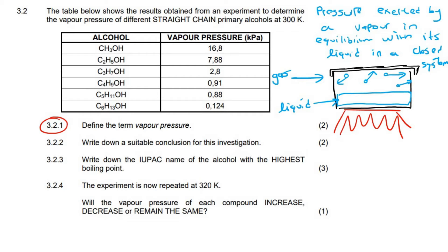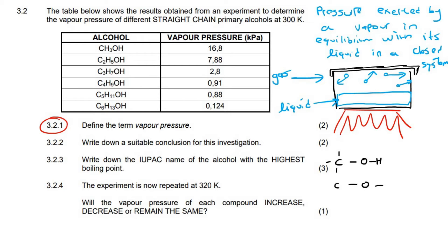Write down a suitable conclusion for this investigation. Let's first talk about what's actually going on here. So we said that this is a one carbon, this is a two carbon, three carbon. This is all about intermolecular forces — vapor pressure has everything to do with intermolecular forces.